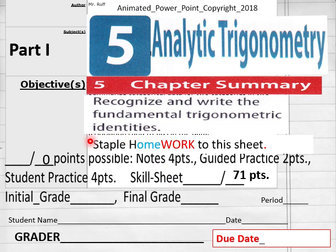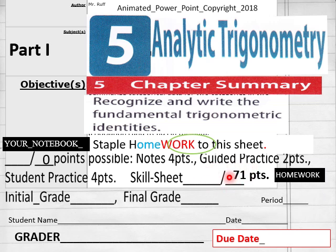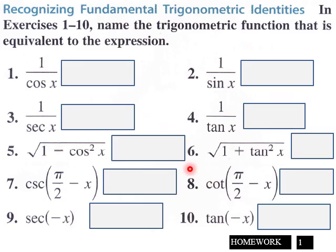Our Part 1 homework for Chapter 5 Review and Summary has 71 points total, students. You should have your homework sheet in front of you. Let's go over it together.